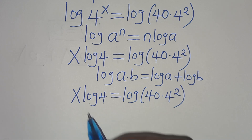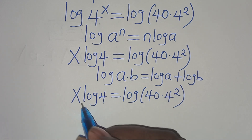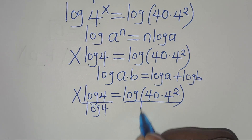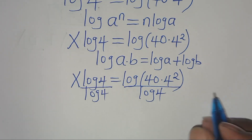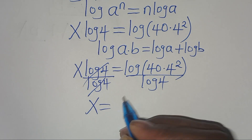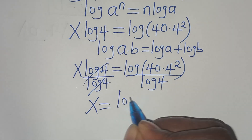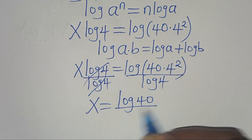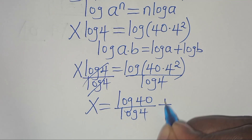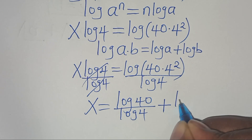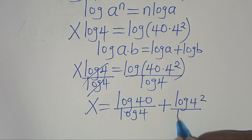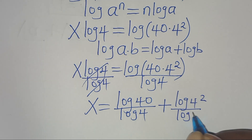Now let's divide both sides by log(4), so that x equals log(40) divided by log(4), plus log(4^2) divided by log(4).